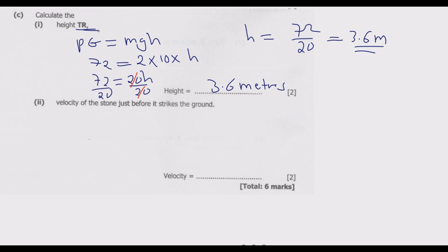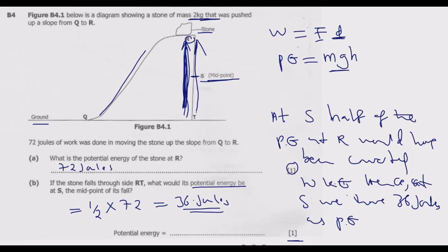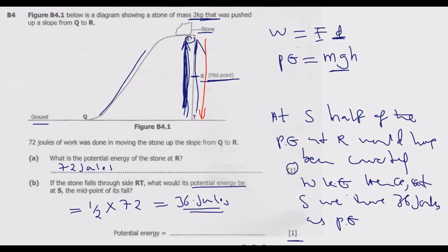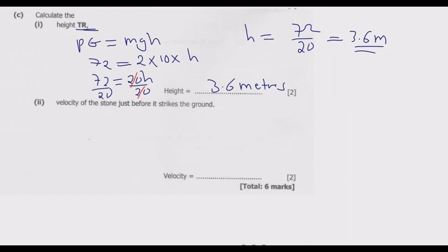Question D: calculate the velocity of the stone just before it strikes the ground. Just before it hits the ground, all of the potential energy would have been converted to kinetic energy. We use that principle. The total potential energy is 72 joules, so this equals the kinetic energy at that point.